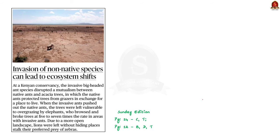This science page article from yesterday's newspaper talks about how a non-invasive species can lead to ecosystem shifts and changes. The article quotes the example of mutualism between native ants and acacia trees in Kenya. The native ants protect the tree from grazers by building their colony, and in exchange the trees provide the ants a place to live.